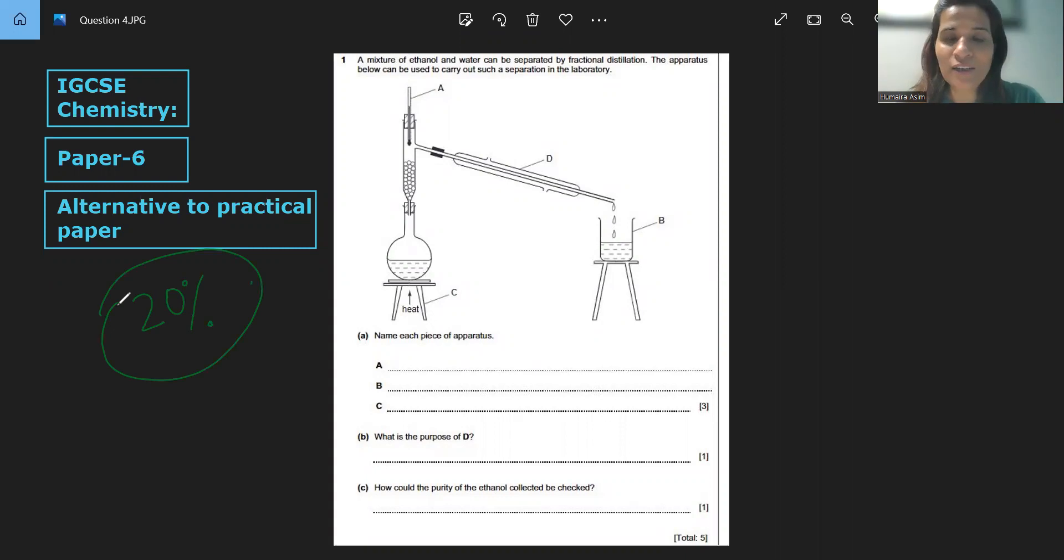So we will look at the question. What does it say? A mixture of ethanol and water can be separated by fractional distillation, which is one of the separation techniques. The apparatus below can be used to carry out such a separation in the lab. So here they have given us these A, B, C, and D apparatus.